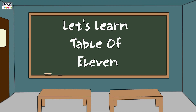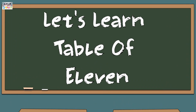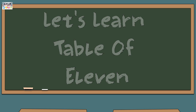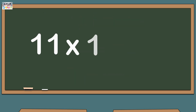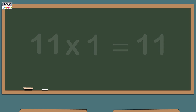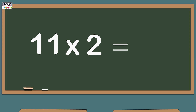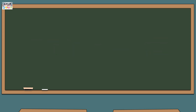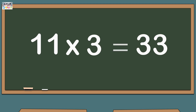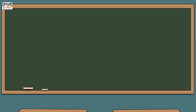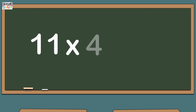Hi kids, let's learn the table of 11. 11 ones are 11. 11 2s are 22. 11 3s are 33. 11 4s are 44.